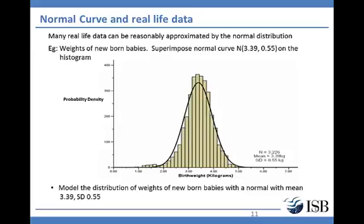What do we mean by approximation by a normal distribution? It means given real-life data, we fit a normal distribution to the data to calculate probabilities of various events. How do you know which data can be approximated by the normal distribution? We discuss the goodness of approximation later. Normal distribution is in general a very useful and widely used distribution. Height and intelligence are approximately normally distributed. Measurement errors also often have a normal distribution. Also, the normal distribution is easy to work with mathematically, and probabilities for normal distribution can be easily computed.